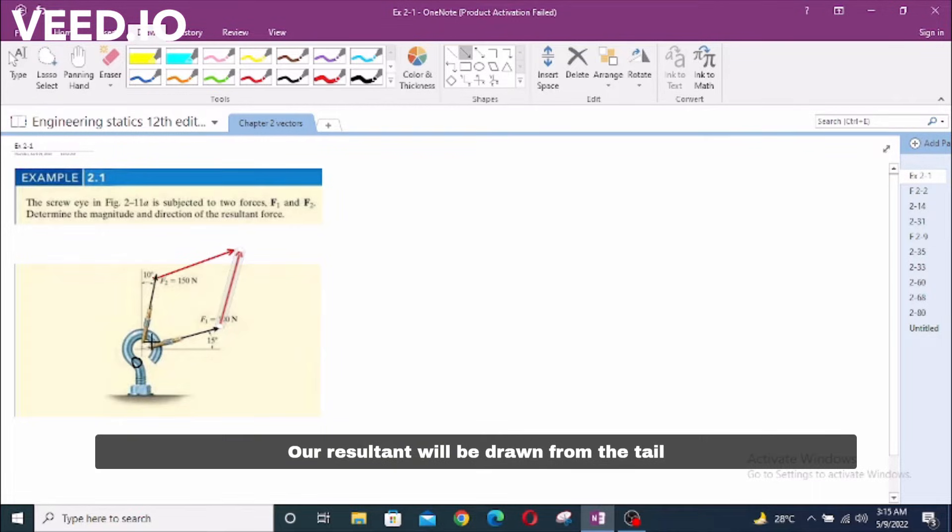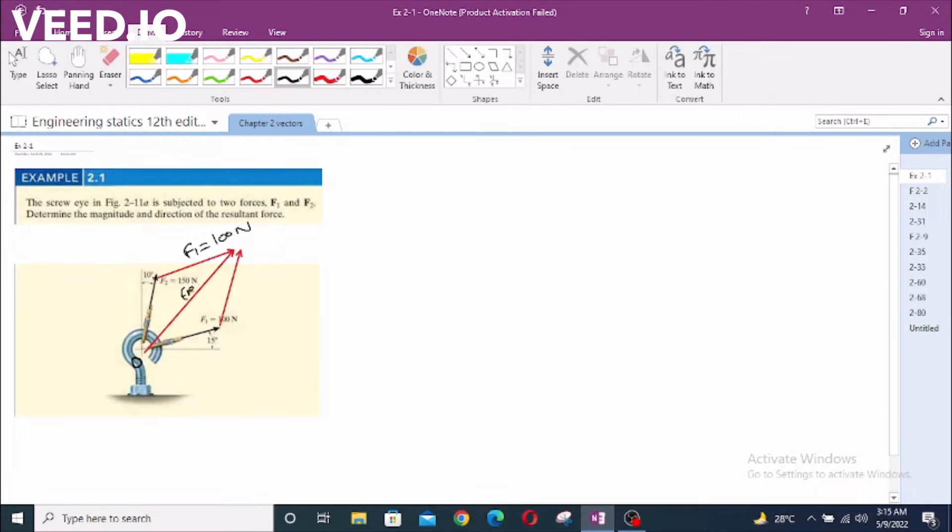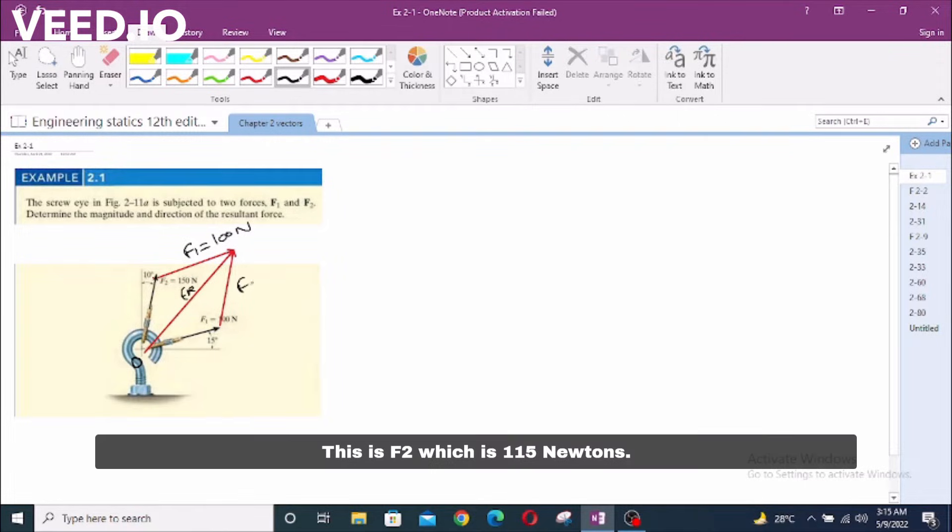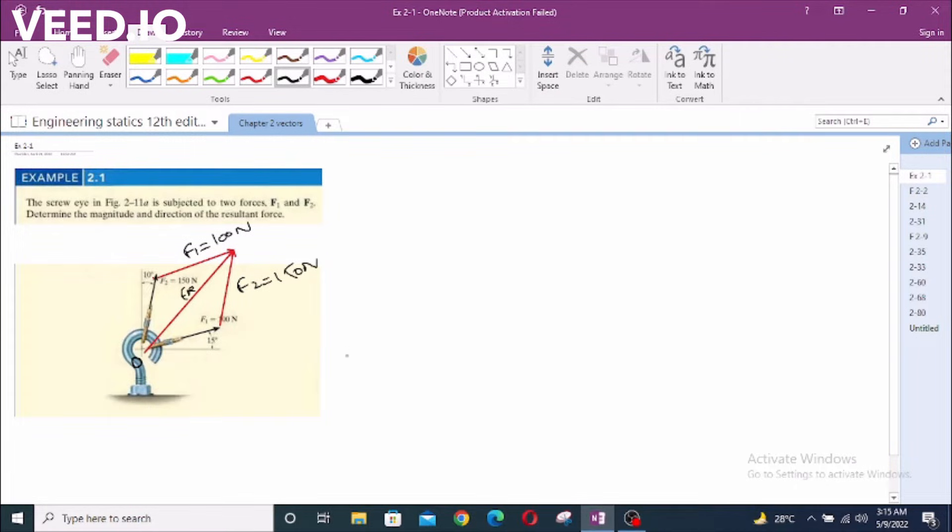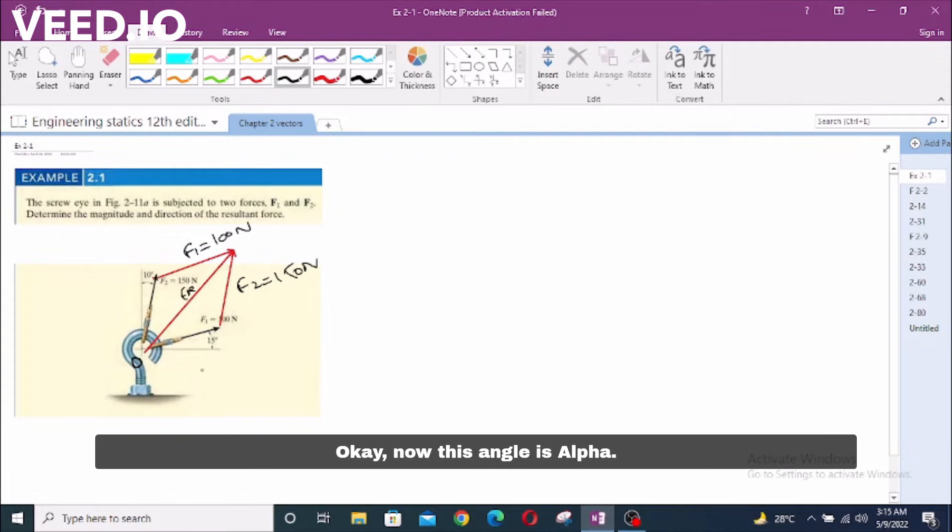Now the resultant will be drawn from the tail of these two forces to the opposite end. Now label them. This one is F1 which is 100 newtons. This is FR. This is F2 which is 150 newtons. This angle is alpha. This angle is also alpha. This angle is beta. This angle is also beta.